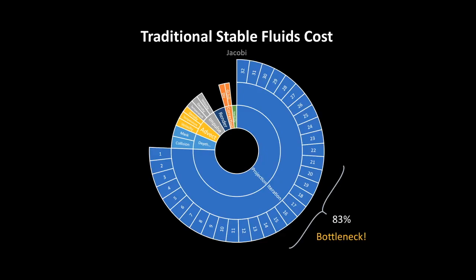For a typical iterative value of 32, almost 83% of the total computation is spent on projection. This is the bottleneck that we would like to improve.